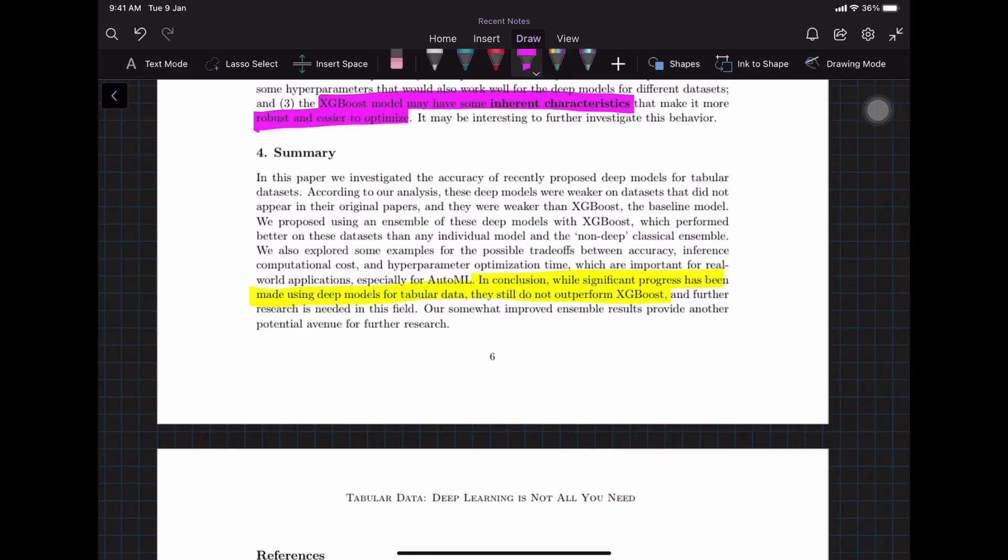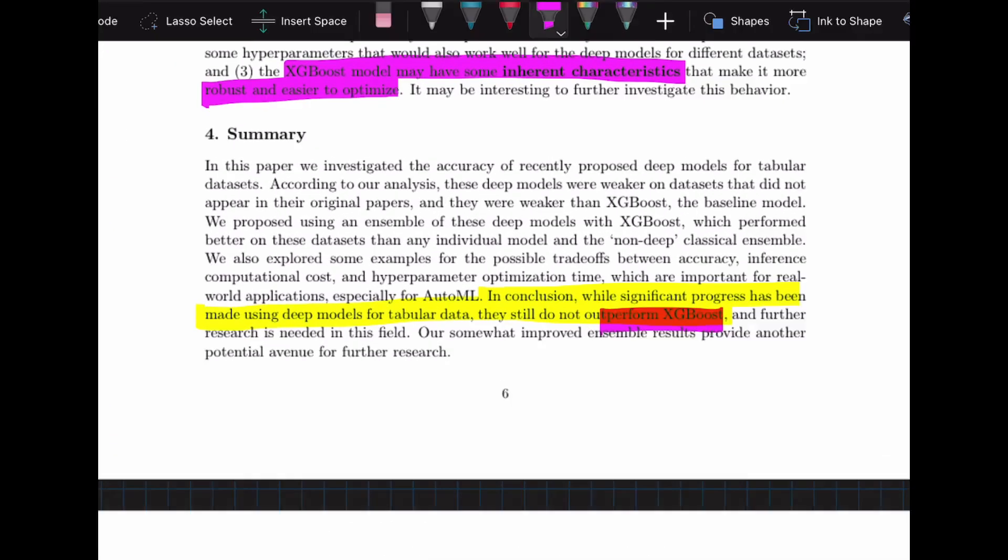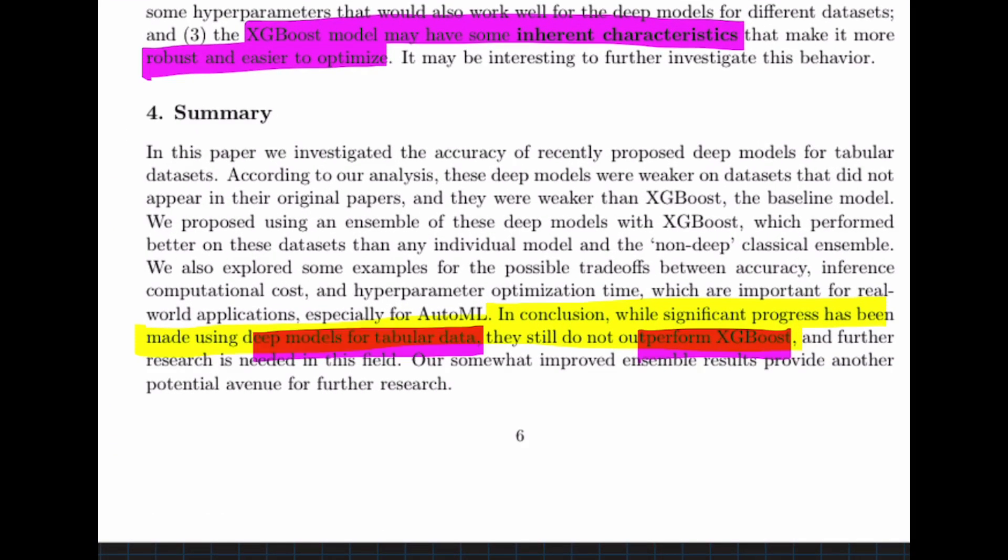So to summarize quickly: XGBoost outperforms all the deep models for tabular data, and none of the deep models outperform XGBoost vice versa. This is very important, especially given that we focus on a lot of AutoML solutions which usually, as far as I know, doesn't combine deep learning models and classical machine learning models. Either you combine a bunch of classical machine learning models like CatBoost, LightGBM, XGBoost—even on Kaggle that's what you would see—or people would combine all the deep learning models.